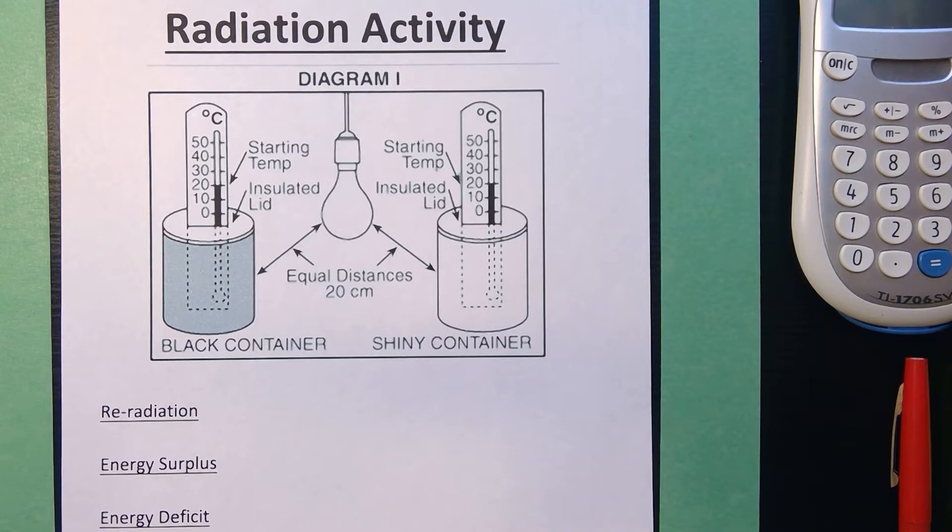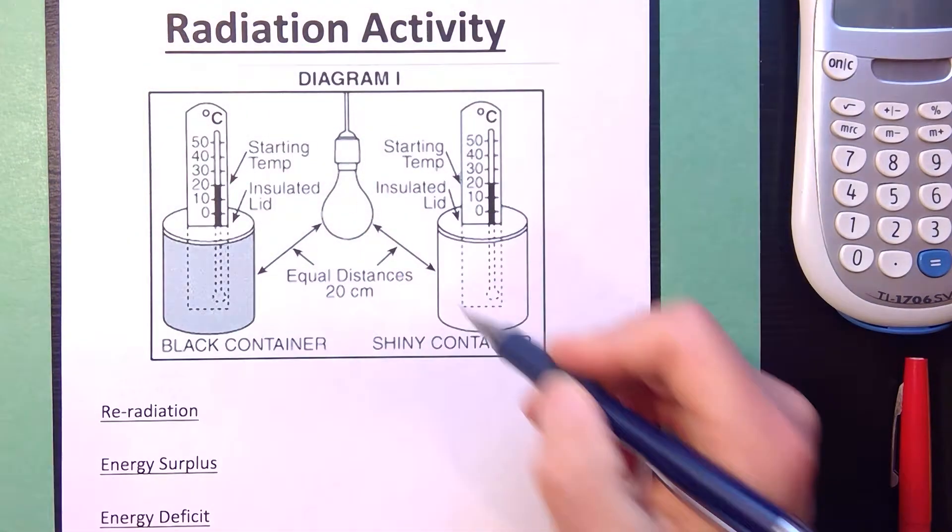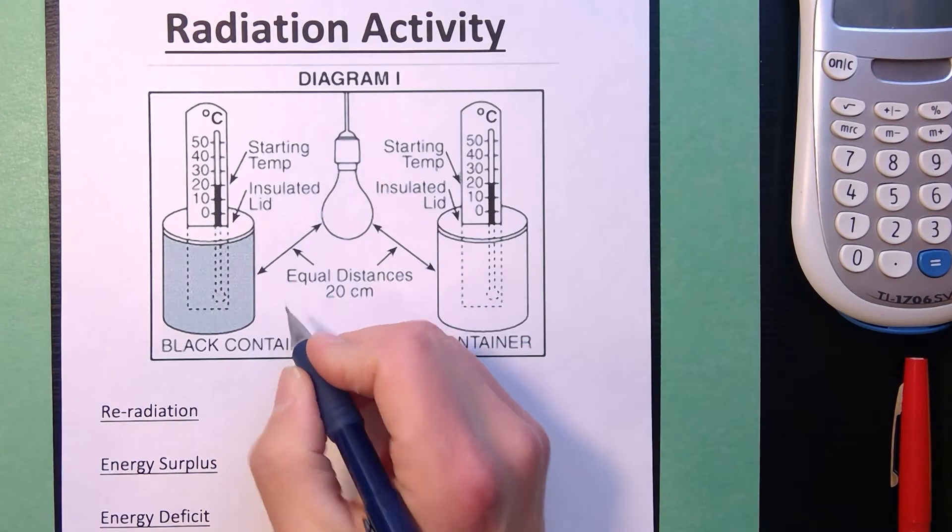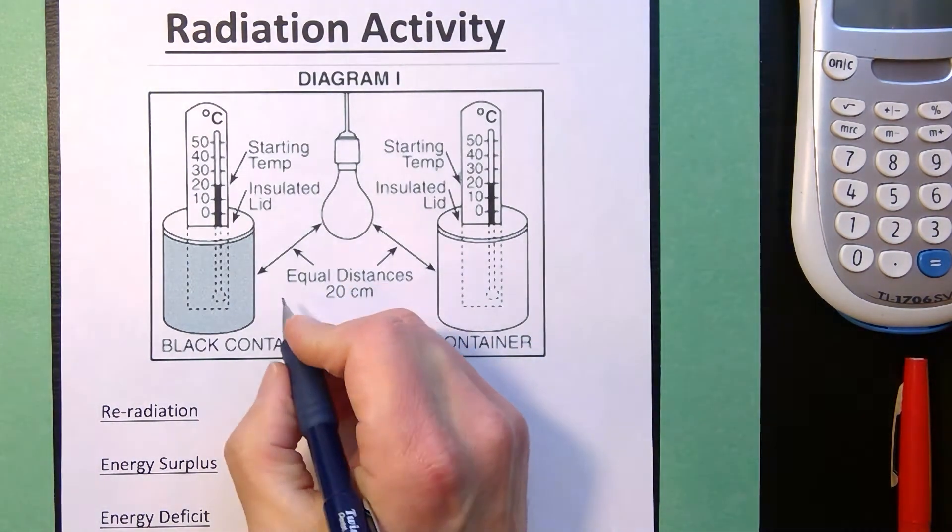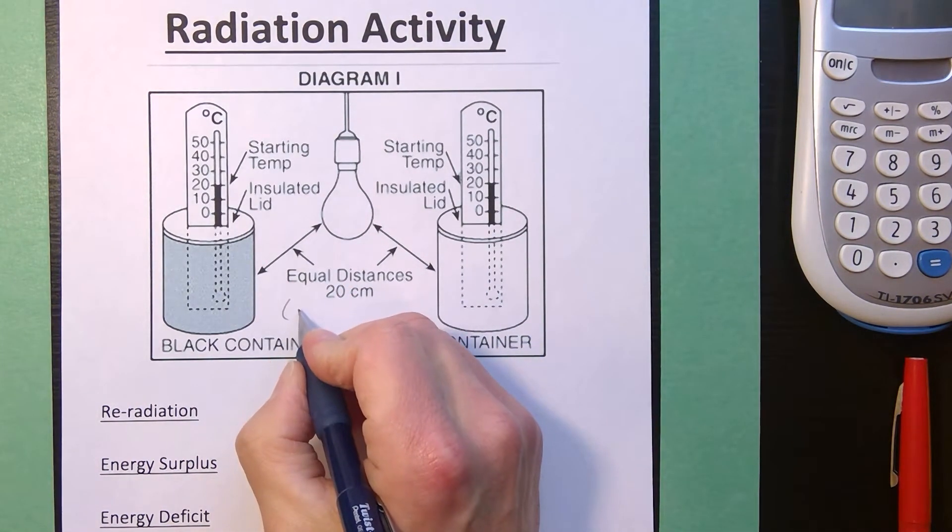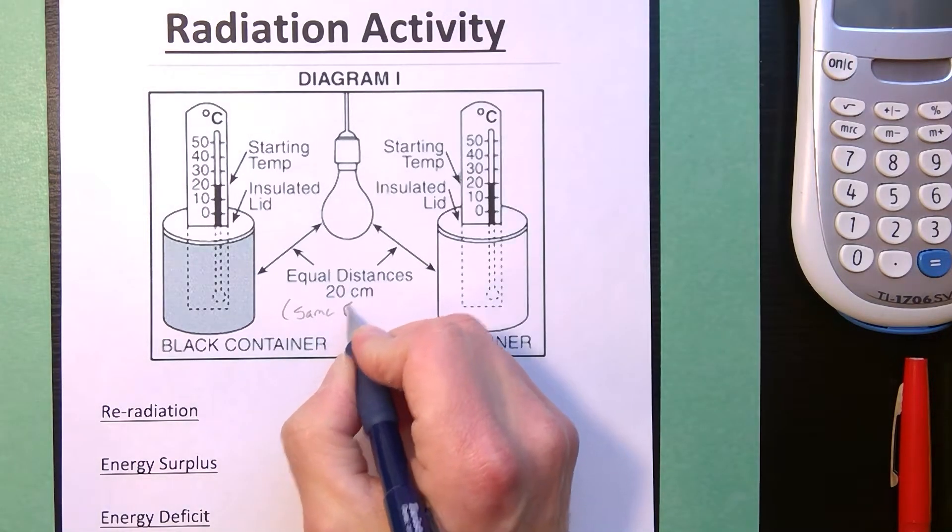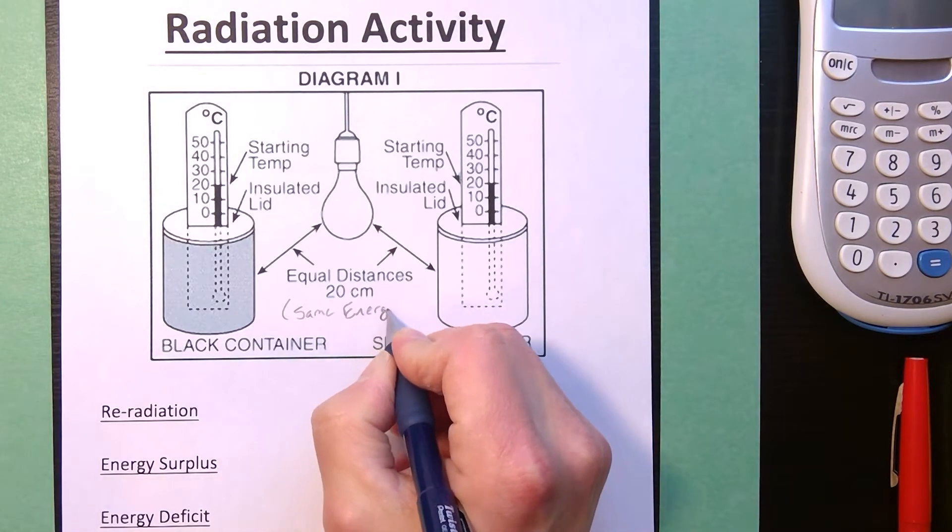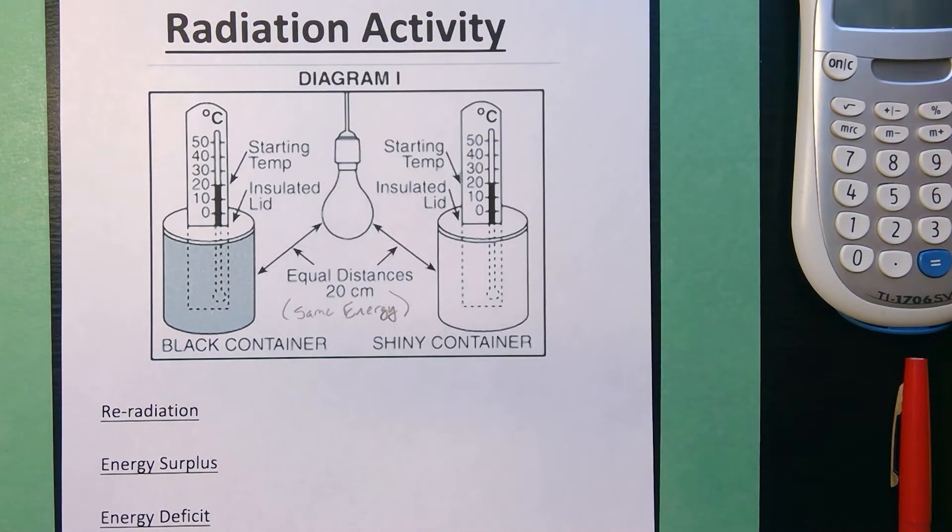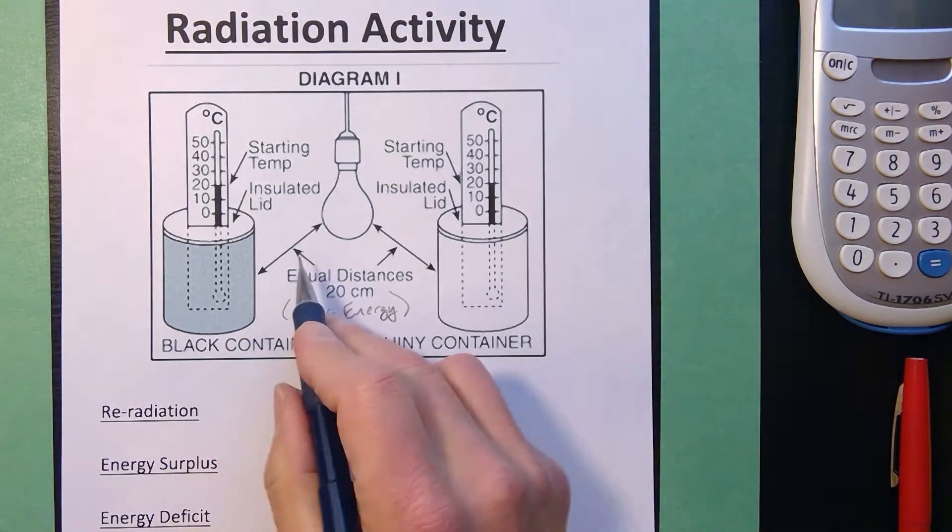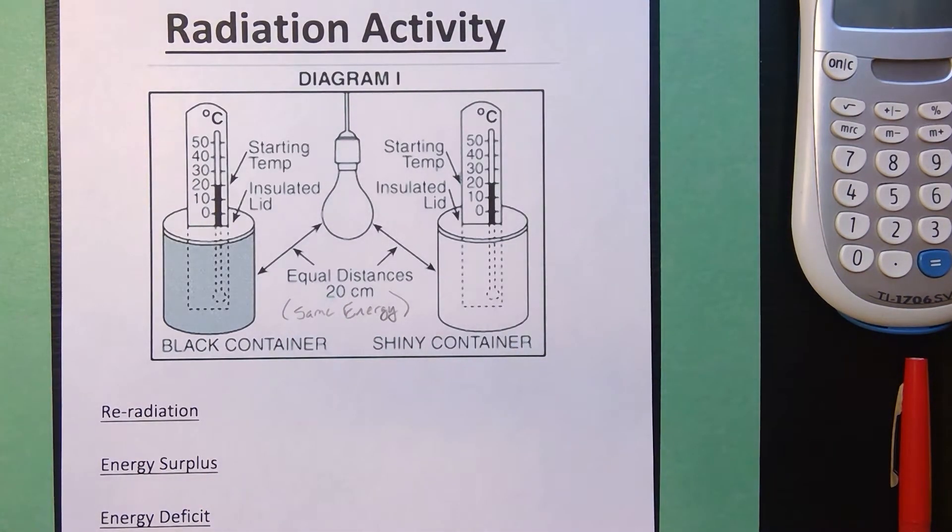Now, one thing you'll notice with the diagram is you have to make sure that you set up your two cans the exact same distance away from the bulb. The fact that they're the same distance means that they're going to get the same amount of energy. The number of joules of energy they receive changes with distance. So if you move them closer, they'd be getting more energy. If you move them farther away, they'd get less energy. You want both cans to be receiving the exact same amount of energy.